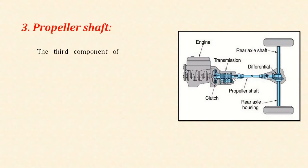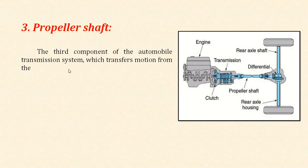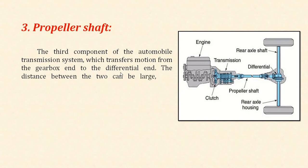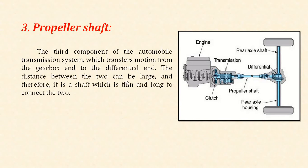The third component is the propeller shaft, which transfers motion from the gearbox end to the differential end. The distance between them can be large, so it is a thin and long shaft connecting the gearbox and the differential via universal joints. The propeller shaft transmits power or torque from the engine to the differential for a front engine rear wheel drive configuration.